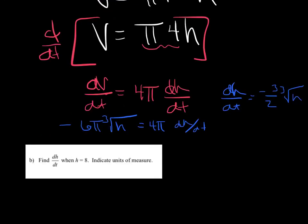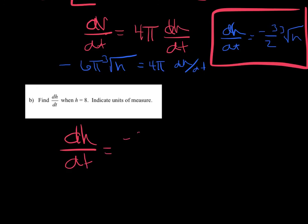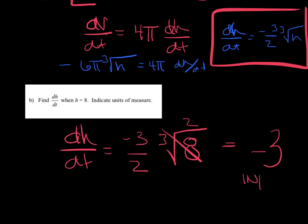All part b says is find dh dt when h equals 8. Now, this is extremely simple, because you already found dh dt in part a here. So all I'm going to say is dh dt is equal to negative 3 halves when h equals 8 cubed root of 8, which of course is 2. So dh dt equals negative 3. And we'll just watch our unit. I believe that's inches per second.